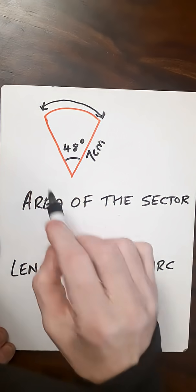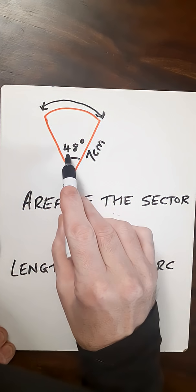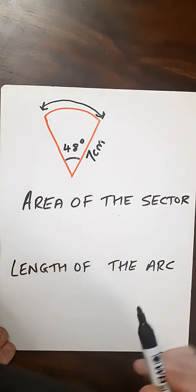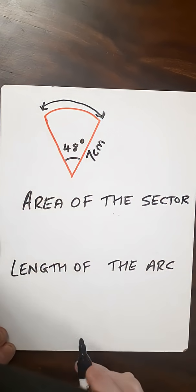So here we've got a sector of a circle and we want to find the area of that sector. It's got an angle of 48 degrees and this radius of the circle will be 7 centimeters. We also want to find the length of the arc, which is the length of this part of the curve here.